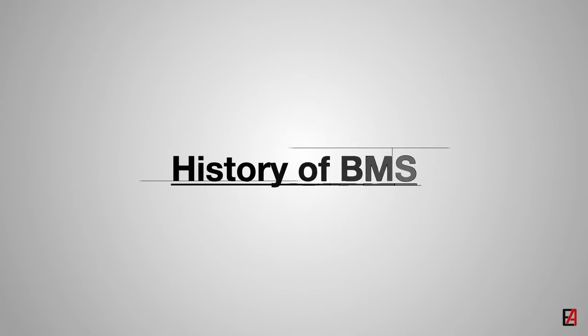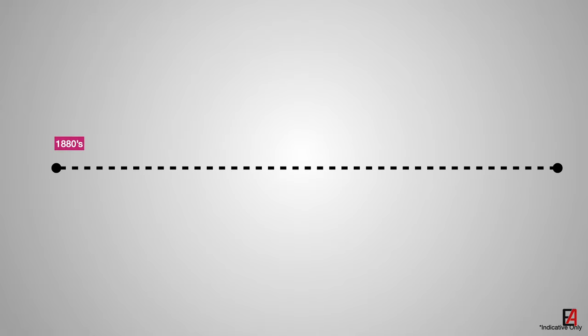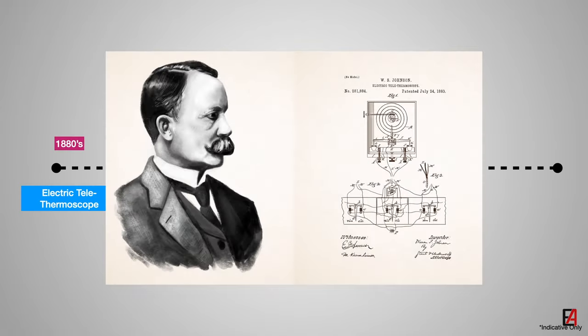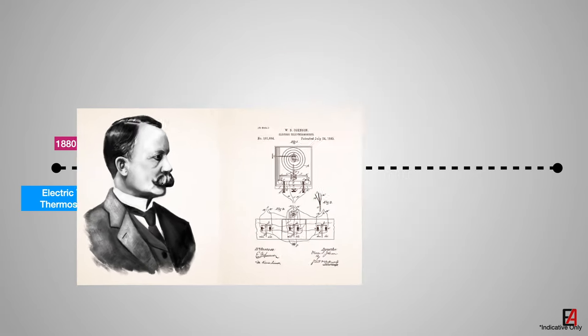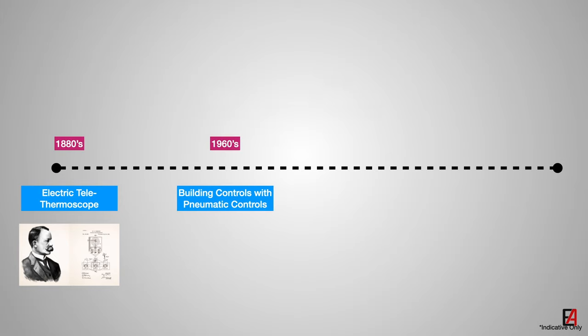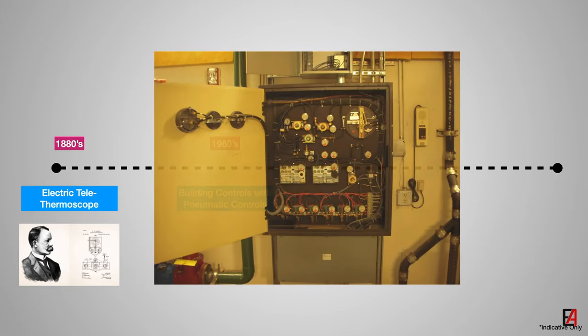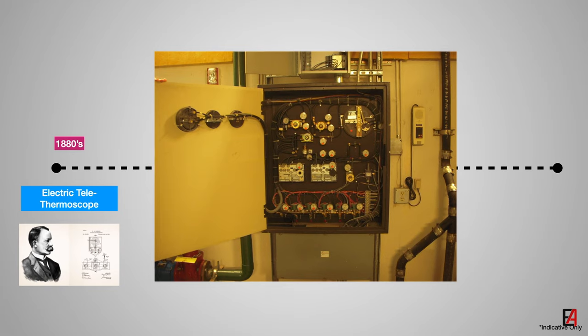Let's learn about the history of BMS. In the 1880s, Warren Johnson, founder of Johnson Controls, patented the electric tele-thermoscope, now known as the thermostat. It is a bi-metal coil with a mercury switch used to alert firemen to open or close the heating damper. Later, Warren Johnson developed this thermostat into a multi-zone temperature control system using pneumatic controls. The pneumatic control uses compressed air to open and close pneumatic control valves or air dampers. It was widely used in building controls in the 1960s.